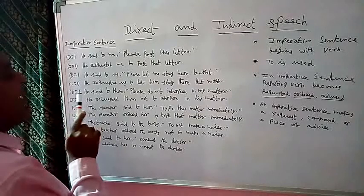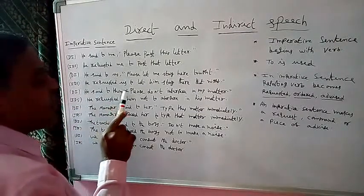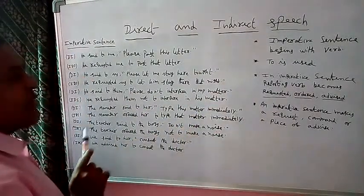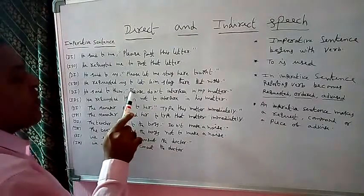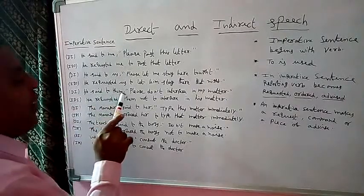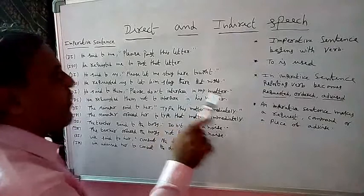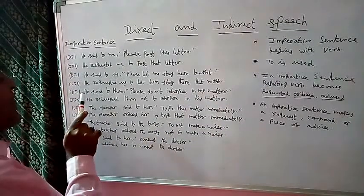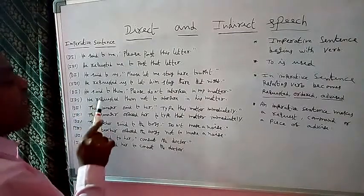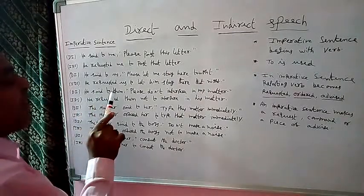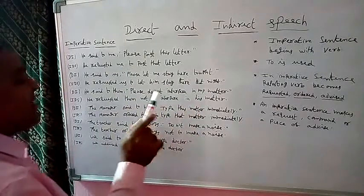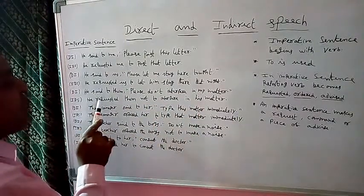The next direct speech example is: He said to them, "Please don't interfere in my matter." The imperative sentence begins with a verb — 'please' is a verb. The subject is 'He', and the same subject must be written in indirect speech. The reporting verb 'said to' becomes 'requested', and the object is 'them'. The same object must be written in indirect speech. The meaning of the sentence is a request, so 'said to' becomes 'requested'.